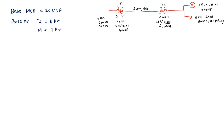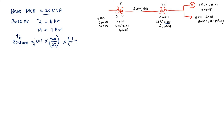Now I am going to find out ZPU_new for transformer 2. The reactance is 0.1. ZPU_new = j0.1 × (20/20) × (11/11)². All terms cancel, and we get the per-unit impedance of transformer 2 as j0.1 per unit.